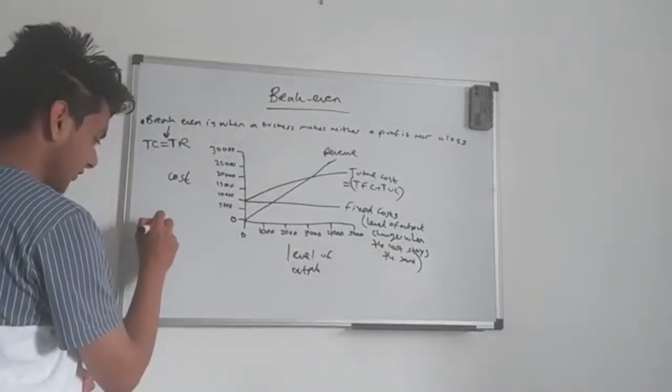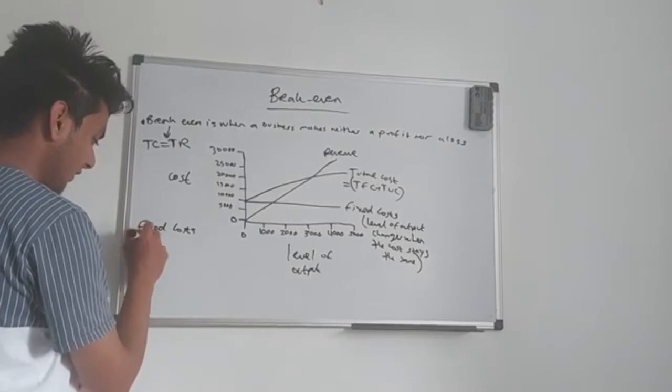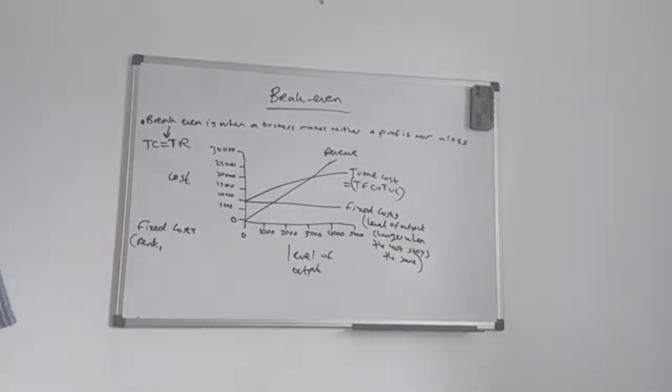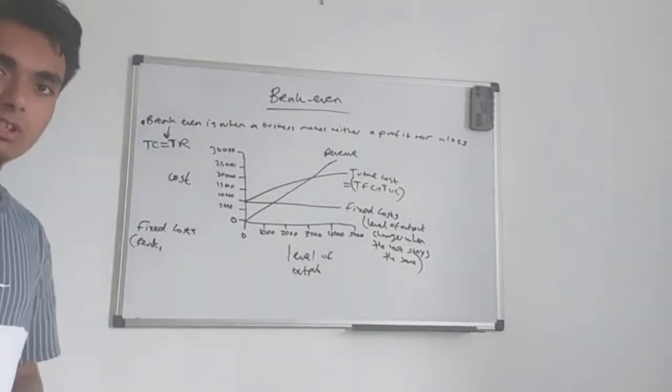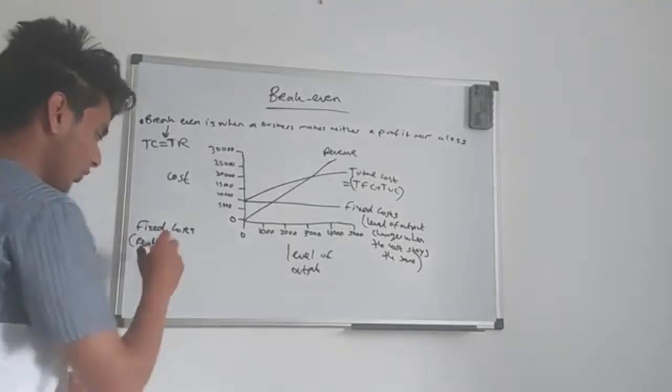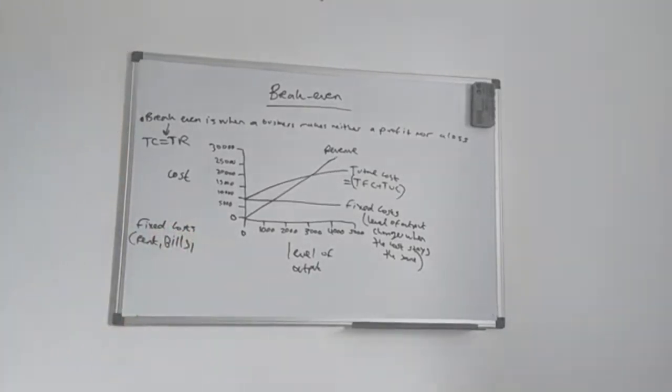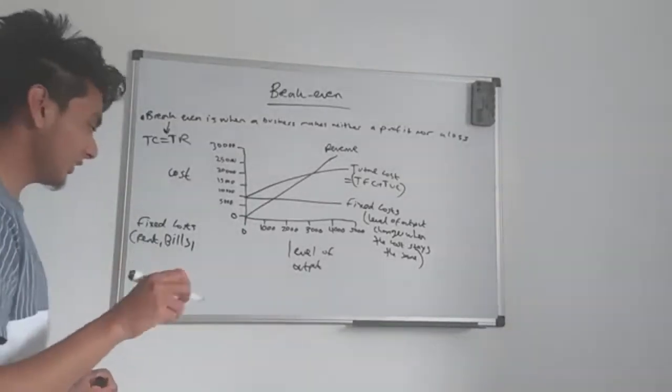So fixed costs. I'll give you some examples. Rent is one of them. When you rent a house, the cost of you renting the house stays the same. It doesn't change. Bills is the second one. The amount of bills you have to pay for electricity, oil, gas to the government also stays the same. It doesn't increase or decrease.